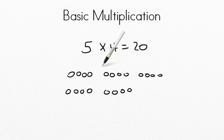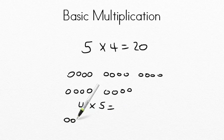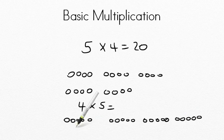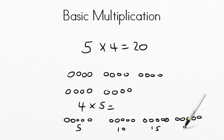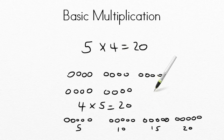Now the really neat trick with multiplication is that if five times four equals twenty, then four times five gives the same product. Looking at four groups of five, counting by fives: five, ten, fifteen, twenty. It's the same product, the same answer. So even though there are different groupings — this time we have four groups of five and before we had five groups of four — it's the same amount. They've just been moved around.